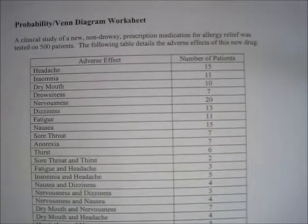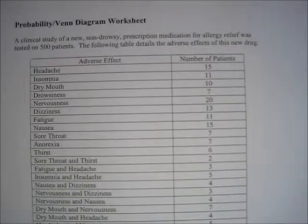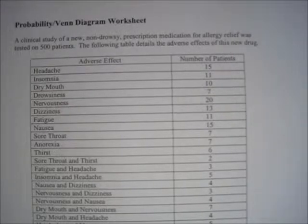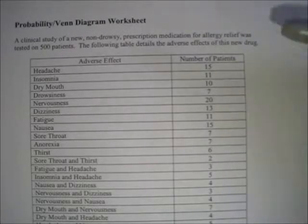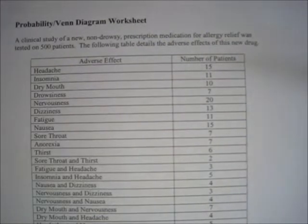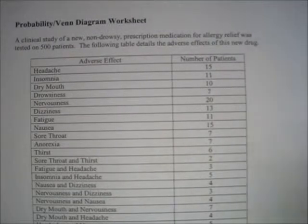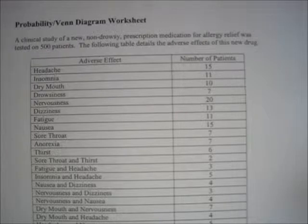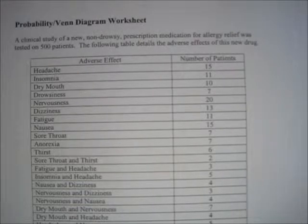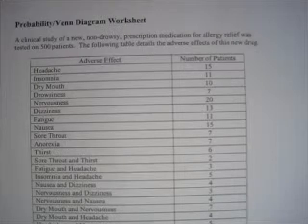Some patients only experienced one type of adverse effect. Others experienced two types, and a few at the bottom experienced as many as three different adverse effects. Our task is to construct a Venn diagram illustrating how many patients are in all the different regions. While we know that 15 total patients experienced a headache, we don't know how many of them experienced just a headache and, say, fatigue. We know three people experienced fatigue and headache, but how many didn't also experience something else? We're going to figure out how many individual patients are in each region. There are 500 total patients, so the entire box for our Venn diagram represents 500.